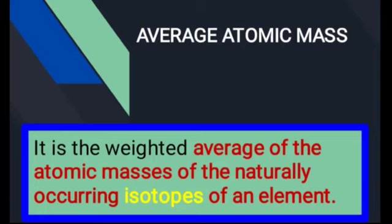ہم جانتے ہیں elements جو ہیں وہ pure substances ہوتے ہیں اور elements similar kind of atoms سے مل کے بنے ہوتے ہیں۔ ایک element دوسرے element سے ہمیشہ different ہوتا ہے، اس لیے کہ کوئی بھی دو elements کبھی بھی ایک جیسے نہیں ہو سکتے — کیونکہ elements کو بنانے والے atoms similar نہیں ہوتے۔